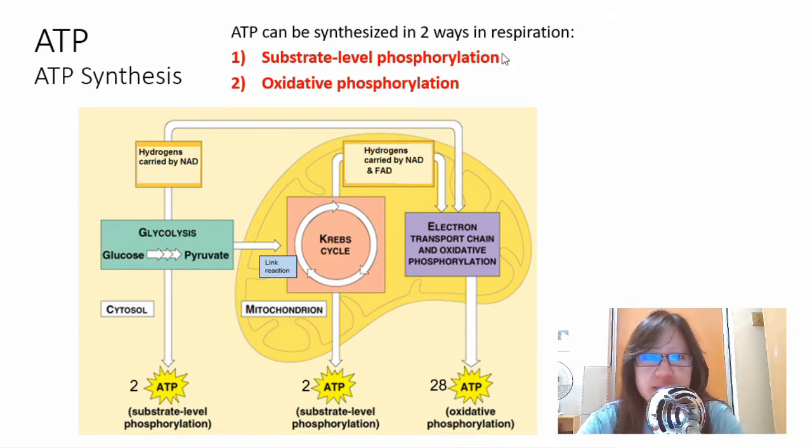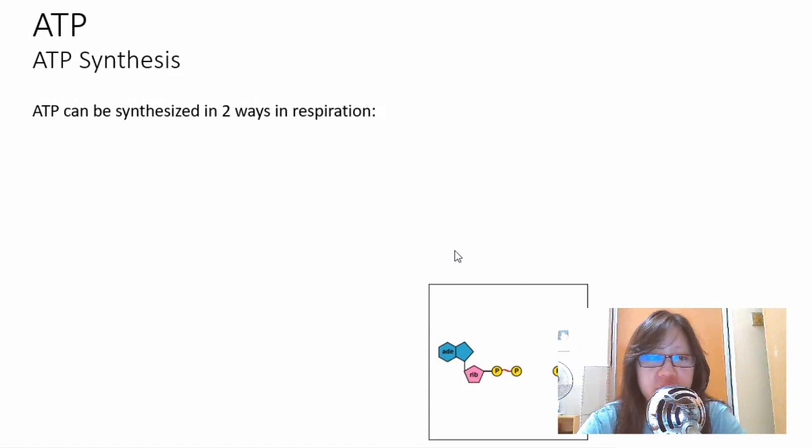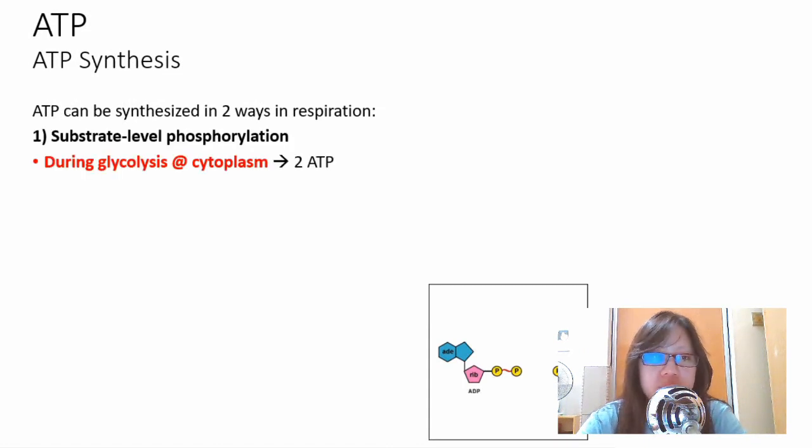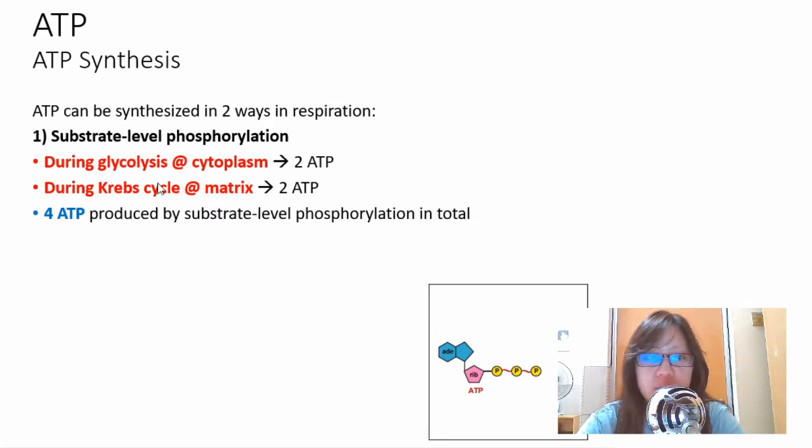ATP can be synthesized in two ways: substrate level phosphorylation and oxidative phosphorylation. Substrate level phosphorylation occurs in glycolysis and in the Krebs cycle, whereas oxidative phosphorylation occurs near the electron transport chain. For substrate level phosphorylation, two ATP are produced in glycolysis, two ATP produced in Krebs cycle, that's four ATP in total per molecule of glucose.